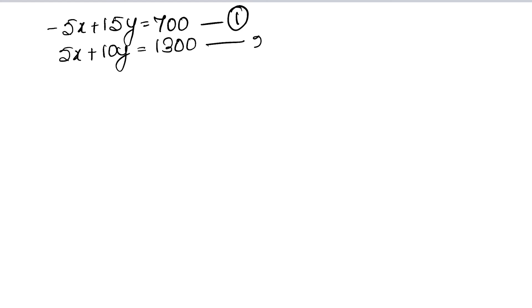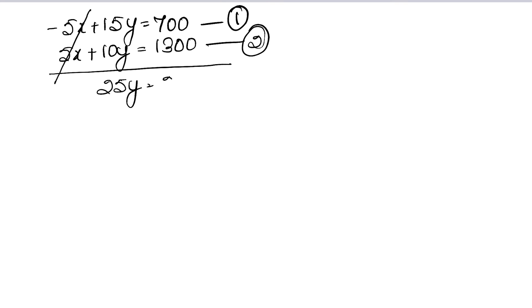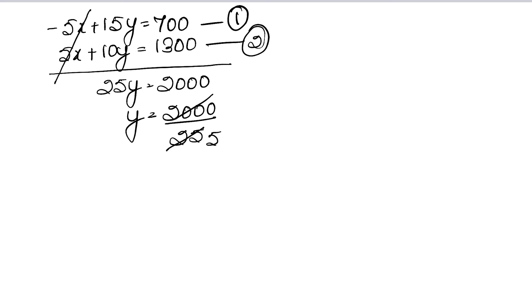अब दोनों equations: Equation 1: −5X + 15Y = 700, Equation 2: 5X + 10Y = 1300. यहाँ X के coefficients same हैं और signs different हैं, तो add करने पर cancel हो जाएंगे. Adding: 25Y = 2000, तो Y = 2000/25 = 80.